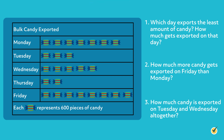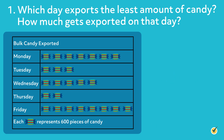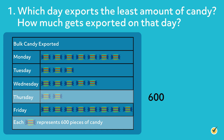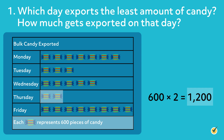Now that you've tried these problems yourself, let's go over them together. Which day exports the least amount of candy? How much gets exported on that day? The least amount of candy gets exported on Thursday. We know this because it has the fewest symbols next to it. To figure out how much gets exported on Thursday, multiply the number of symbols by the amount it signifies. According to the key, each symbol represents 600 pieces of candy. Since there are two symbols next to Thursday, multiply 600 times 2, which equals 1,200. Therefore, 1,200 pieces of candy get exported on Thursday.